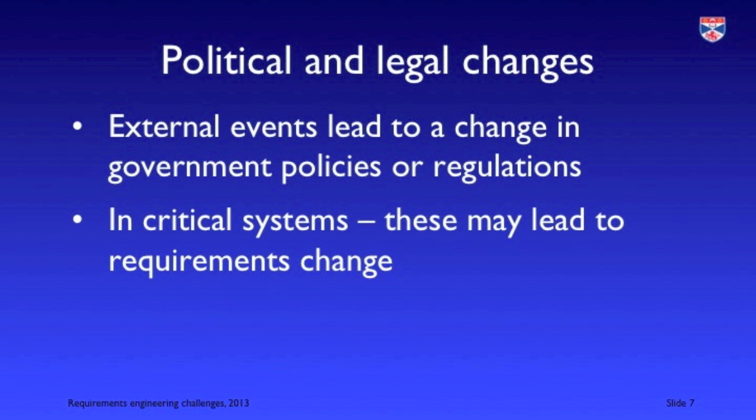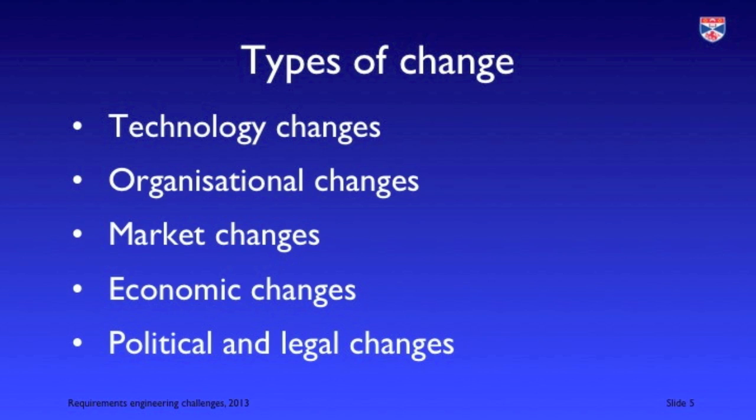And there may be political and legal changes. If we have a safety critical system and somewhere completely separate there is an accident, the laws may change to reflect the issues and problems revealed in the analysis of that accident, and these affect the system being developed. So there's a whole range of sources of requirements change that can affect the overall requirements of a system.